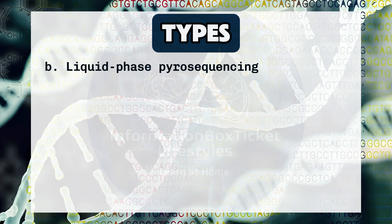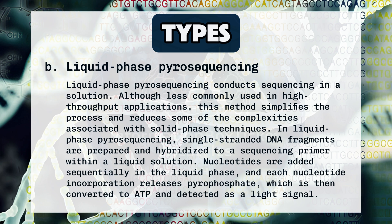Liquid Phase Pyrosequencing conducts sequencing in a solution. Although less commonly used in high-throughput applications, this method simplifies the process and reduces some of the complexities associated with solid phase techniques. Single-stranded DNA fragments are prepared and hybridized to a sequencing primer within a liquid solution. Nucleotides are added sequentially, and each nucleotide incorporation releases pyrophosphate, which is then converted to ATP and detected as a light signal.